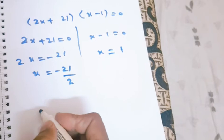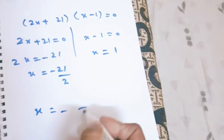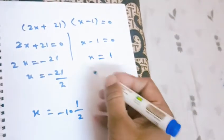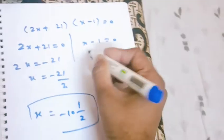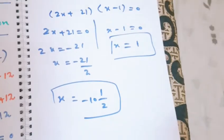So x will be equal to -21/2. So this is the answer and this is the answer. Both are acceptable. Okay students, that's all for this.